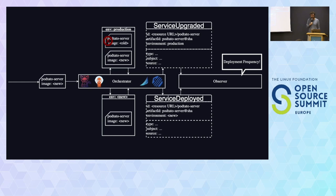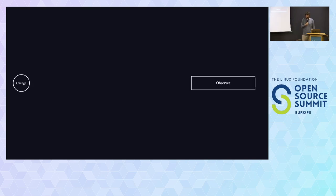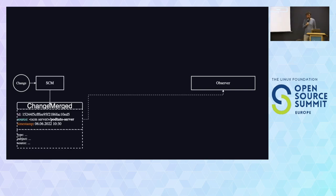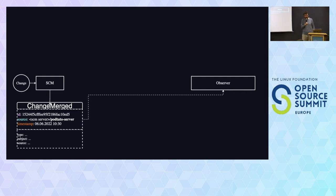The next metric is lead time for changes — how long it takes from an approved change to it being built, packaged, uploaded, and deployed. We start with the change: we use SCM, create a pull request, get it approved, and when it's merged, a "change merged" event is sent, providing information about the repository, the SHA of the commit, and other details that can help uniquely identify this change down the line.